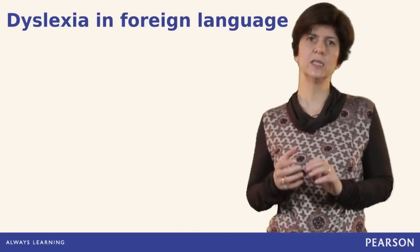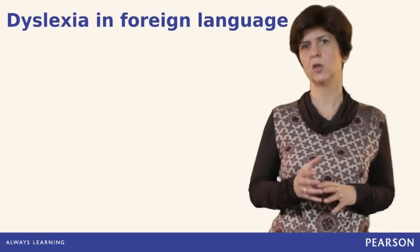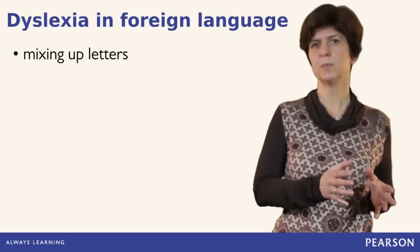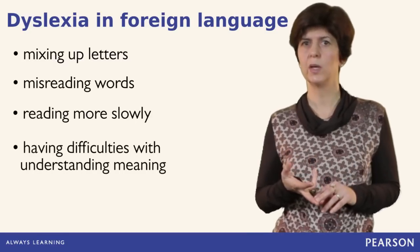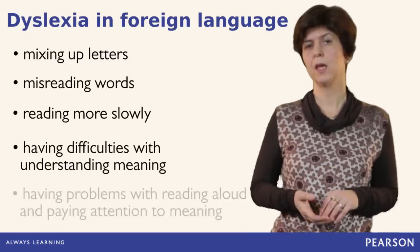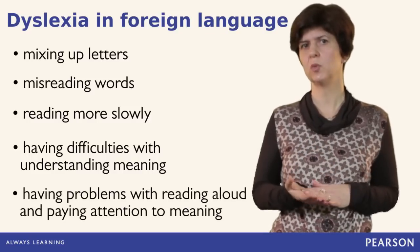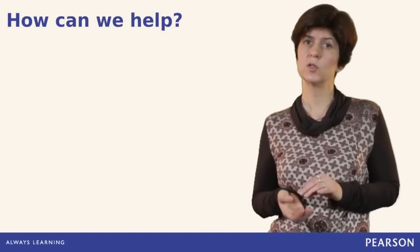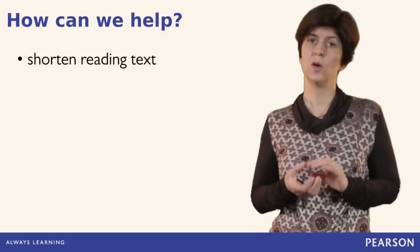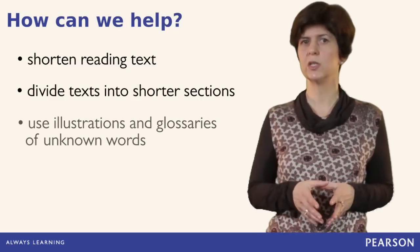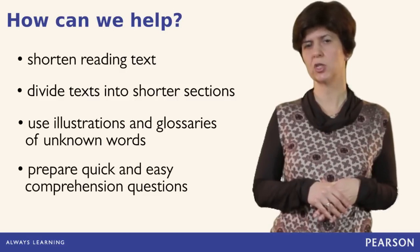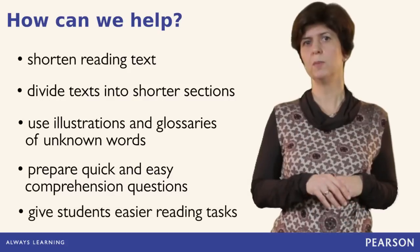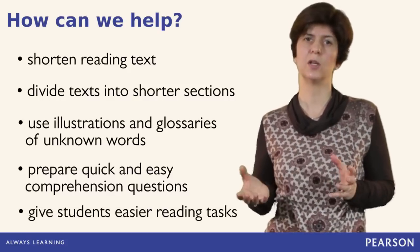Now that we have seen what dyslexia is, what it can be caused by, and how it affects students in general, let us look at the language learning processes and difficulties of dyslexic students. Just as in the student's first language, dyslexia can cause problems in reading in another language. Students might mix up letters, misread words, read more slowly, and have difficulties understanding the meaning of texts. They might find it challenging to read a text aloud and to pay attention to what they are reading at the same time. Therefore, it is useful to shorten reading texts for dyslexic students, or to divide them into shorter sections. Illustrations, glossaries of unknown words, and quick comprehension questions can also help. We can also give them easier reading tasks, such as finding key information instead of reading for detail.